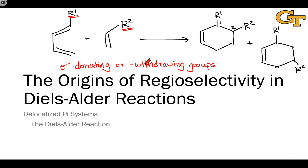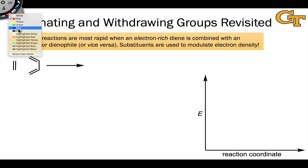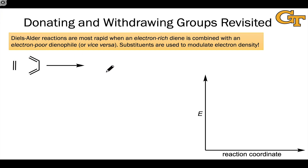We'll return to the idea of donating and withdrawing groups and see how resonance can help us predict the major product of Diels-Alder reactions in a regiochemistry sense in this video. In the next video, we'll turn our attention to the stereochemical outcome when diastereomers can form. Before we get into site selectivity, most synthetically useful Diels-Alder reactions that occur at an appreciable rate at normal temperatures occur when we polarize the diene and dienophile through the introduction of donating or withdrawing substituents.